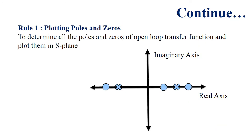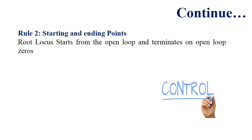Rule 1: determine all the poles and zeros of the open-loop transfer function and plot them in the S-plane. The S-plane basically consists of real and imaginary axes. Poles can be shown in the form of a cross and zeros can be shown in the form of circles.